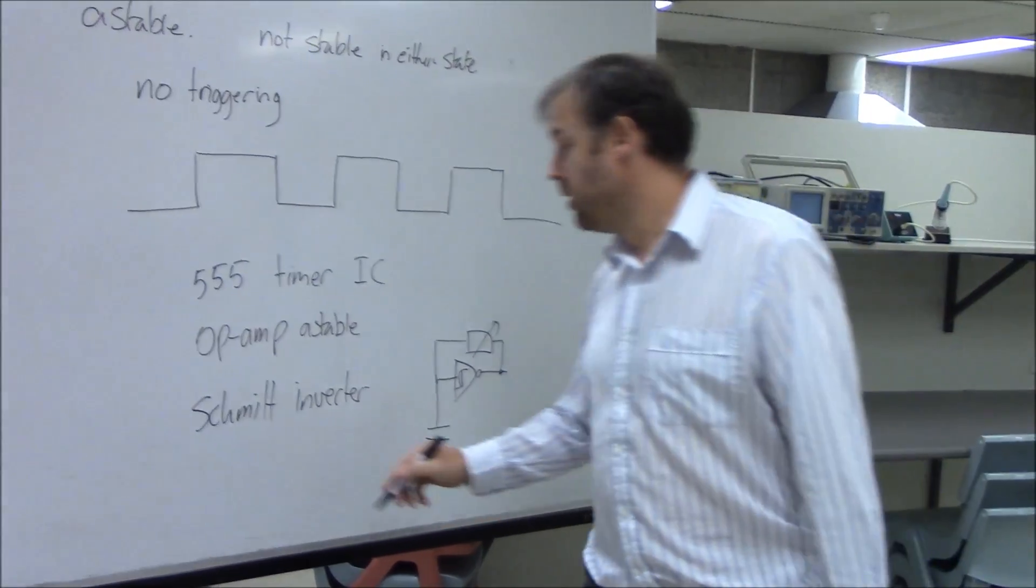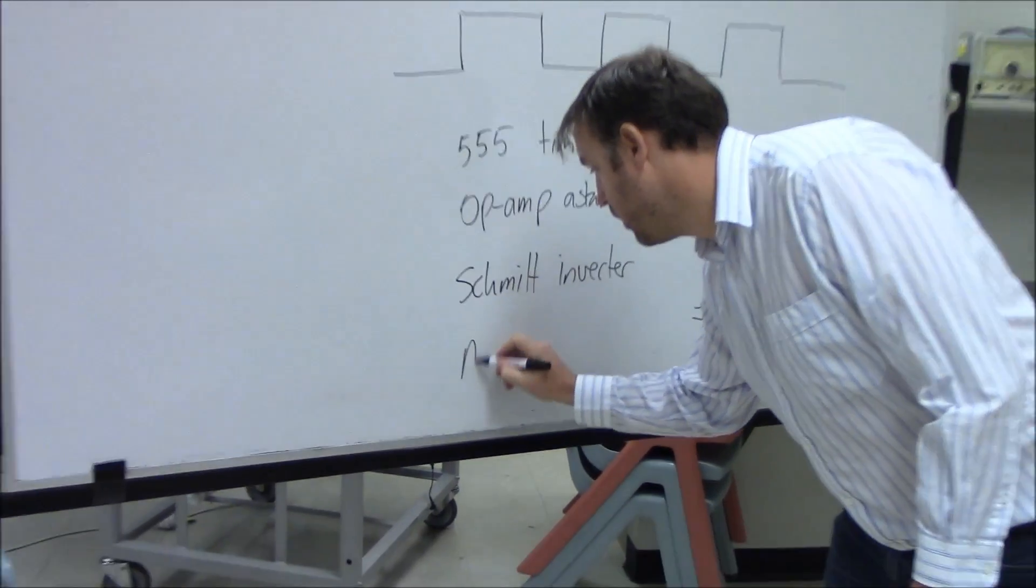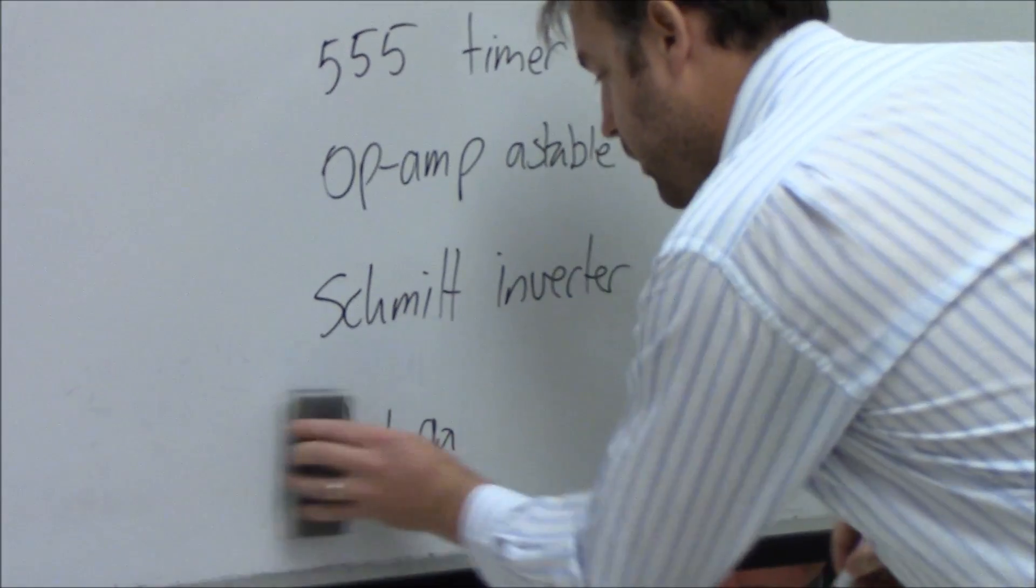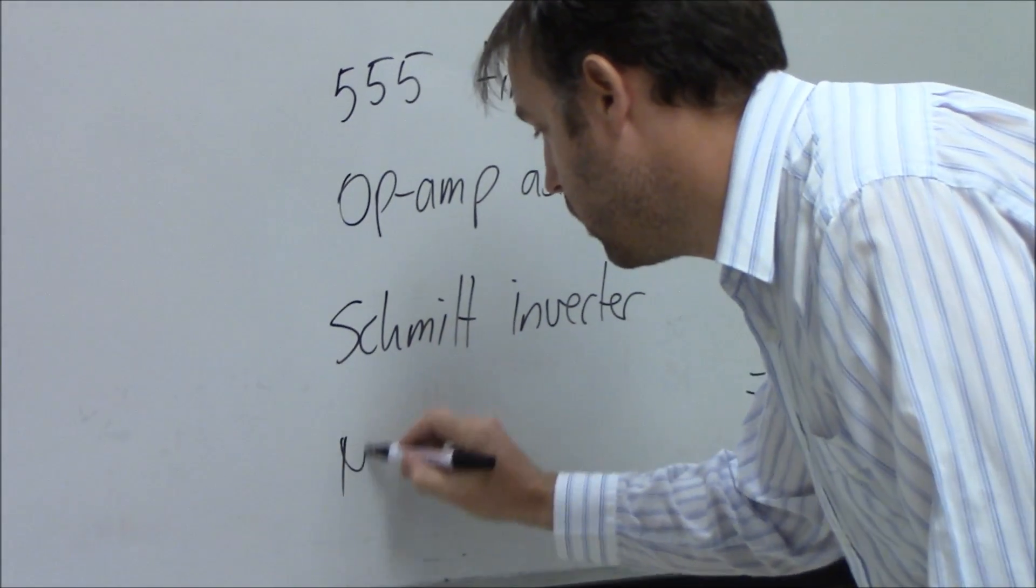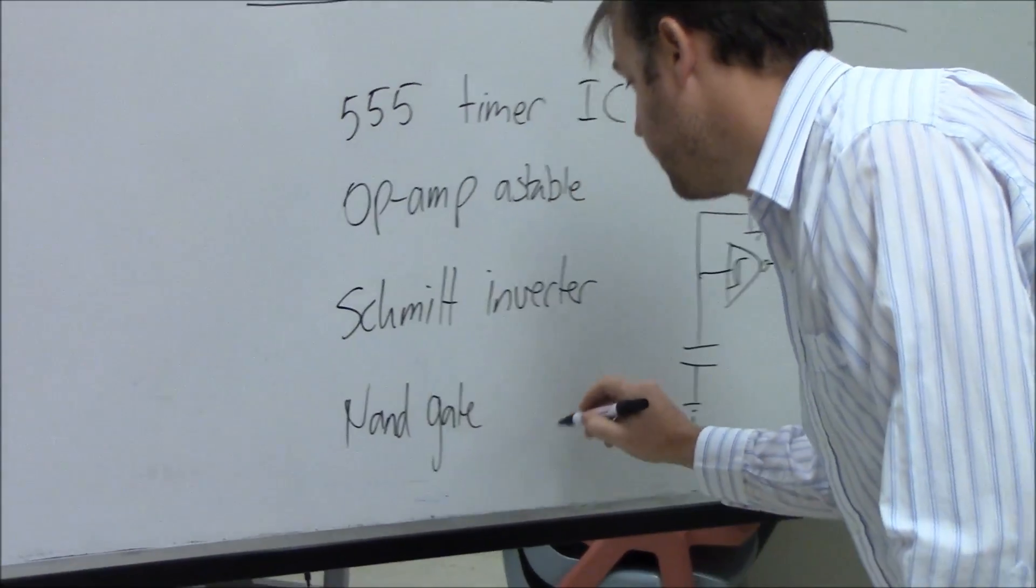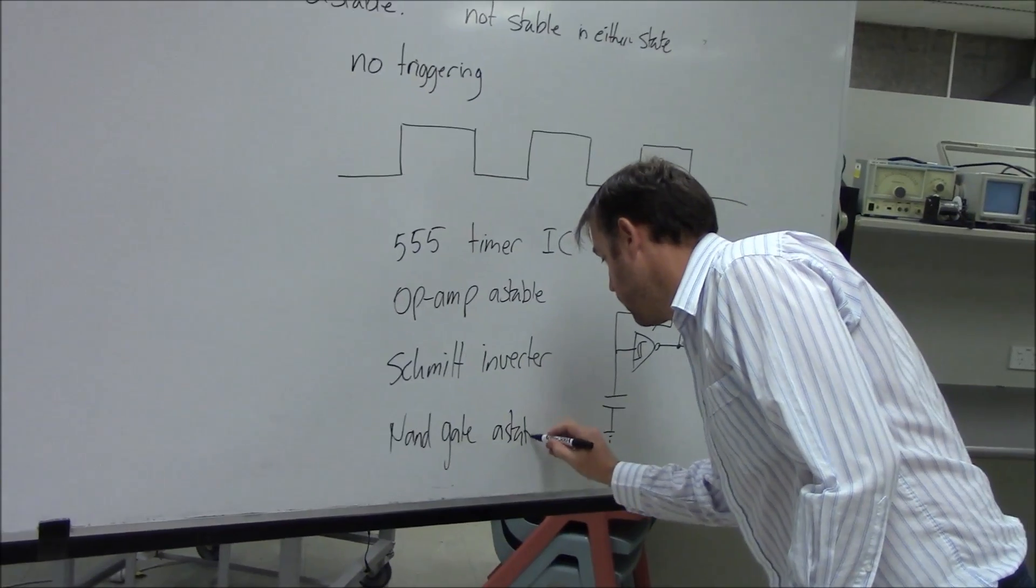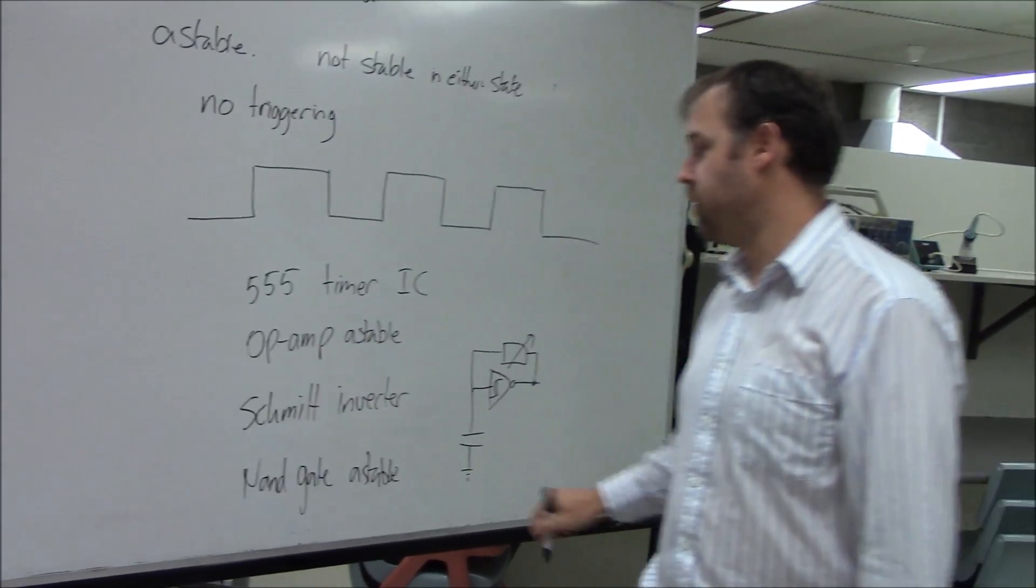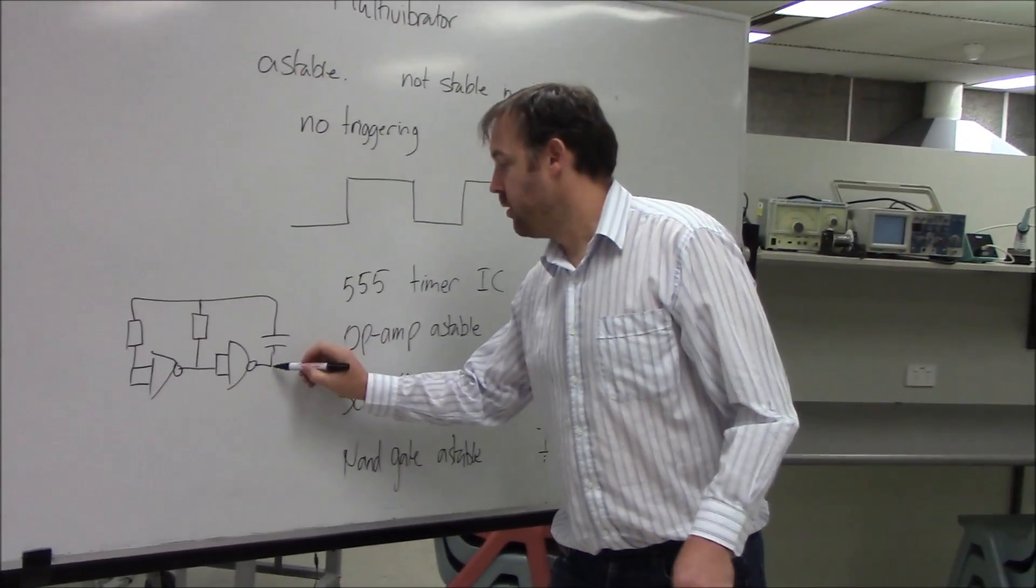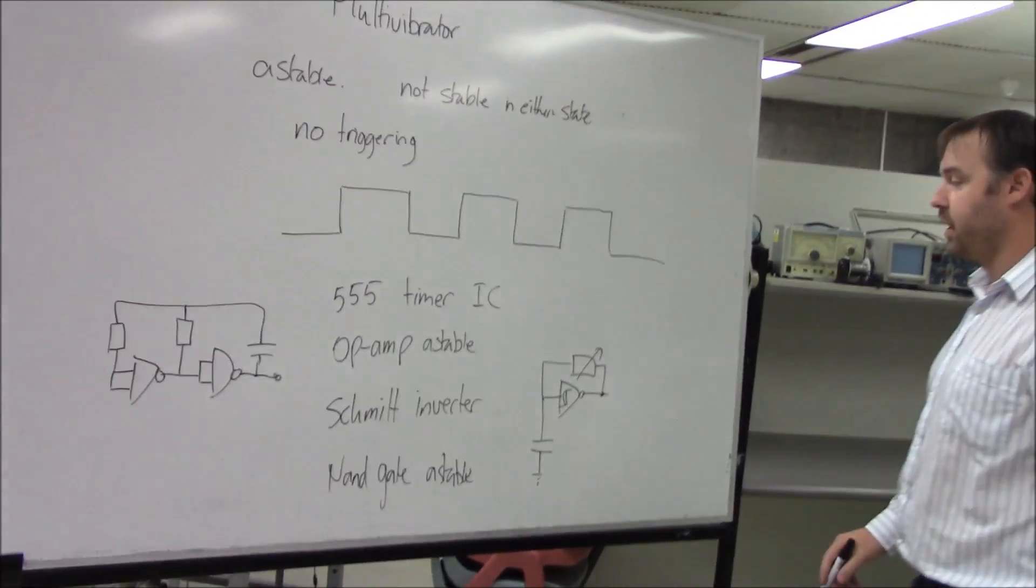There is another one which uses a NAND gate. The NAND gate astable, and the diagram for this one, the output of that will operate, that'll be our astable.